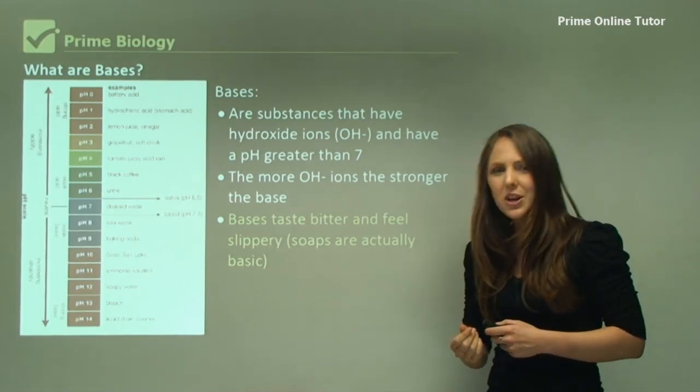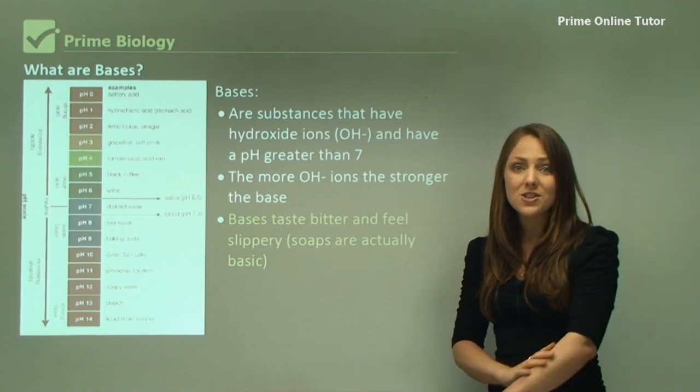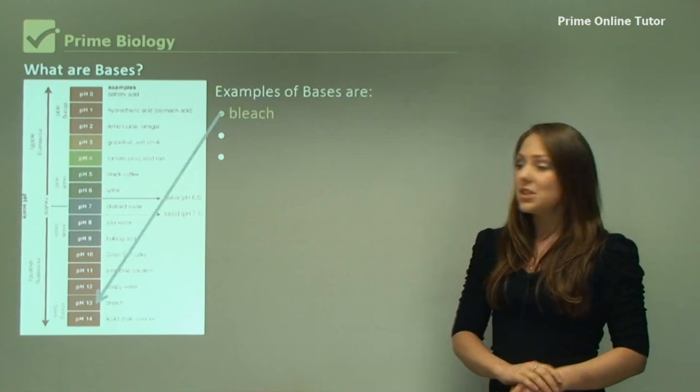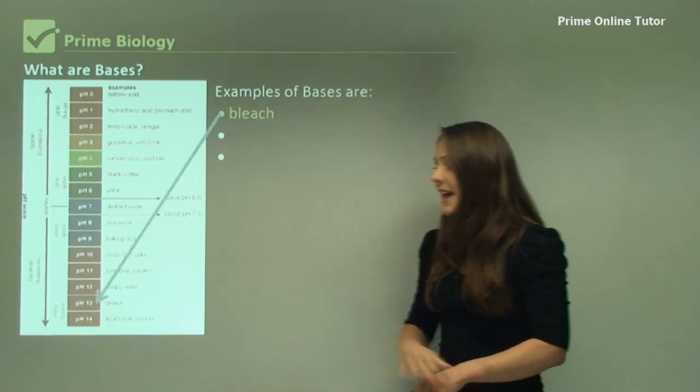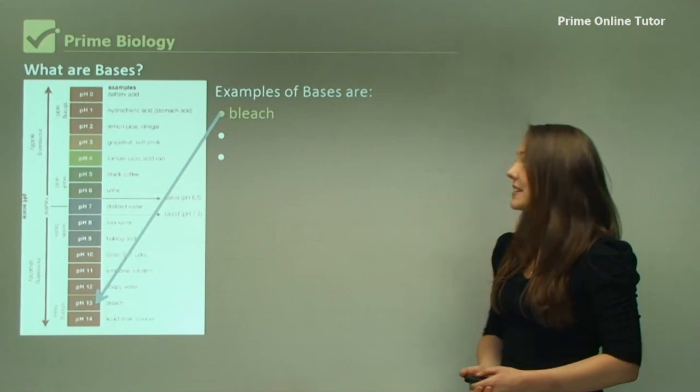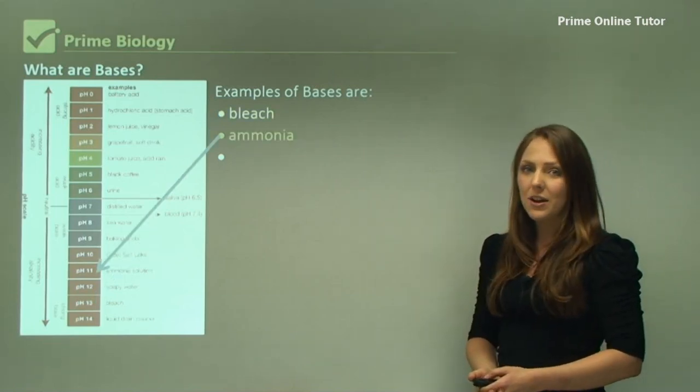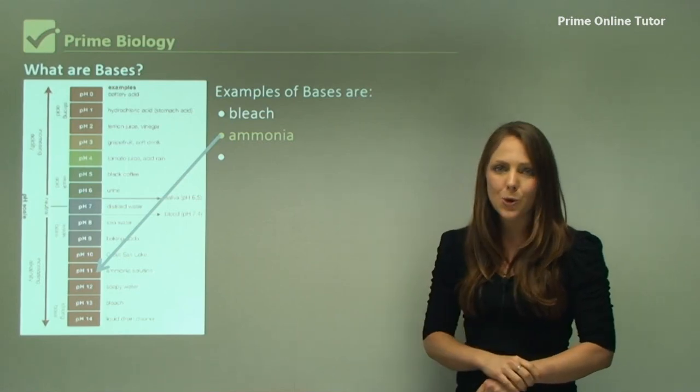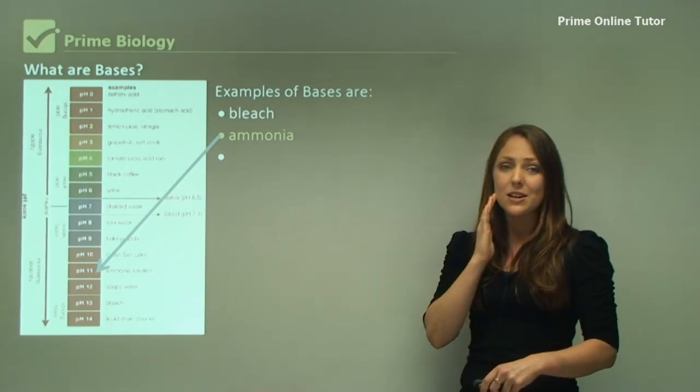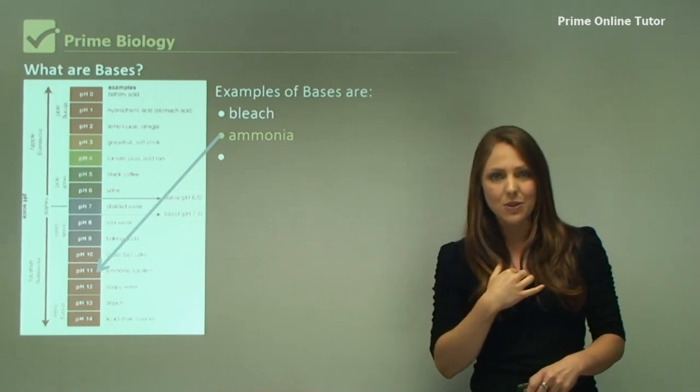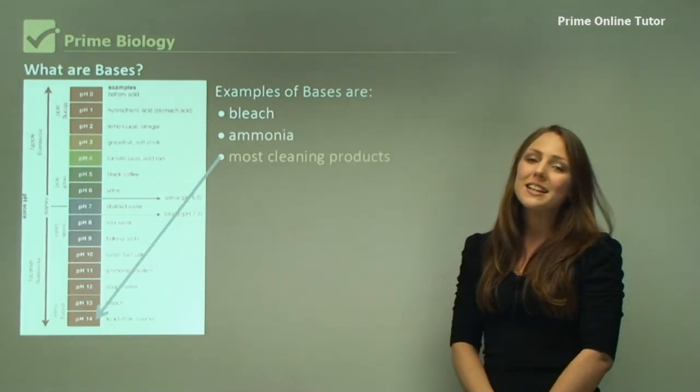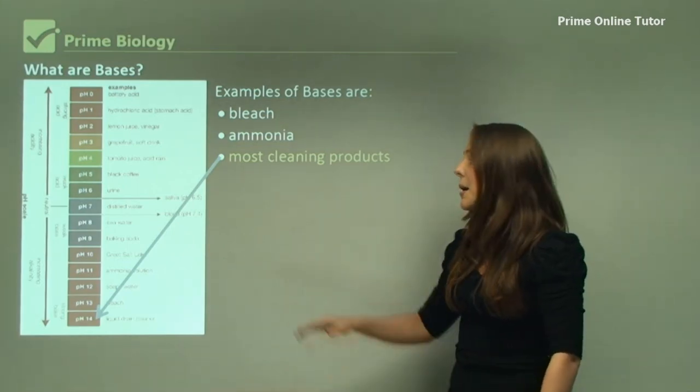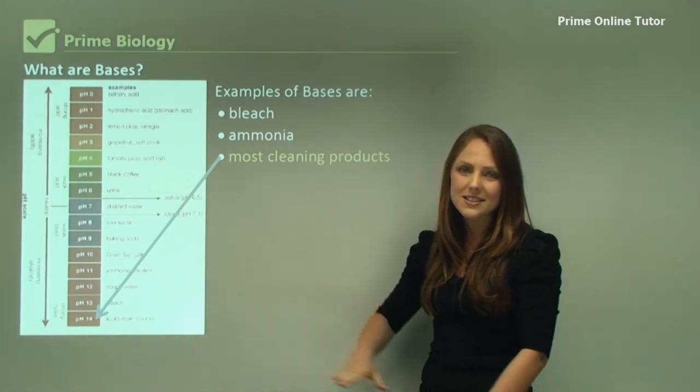Examples of bases: bleach, as you can see here, bleach has a pH of 13, so it's very basic. Ammonia is another one - you need to be careful with this one. It is a household product but if you put your nose over it, it can actually burn all the nose hairs in your nose and even burn down your throat. Most cleaning products are basic, so it includes soaps that you wash your hands with, but they won't be as strong as the cleaning products.